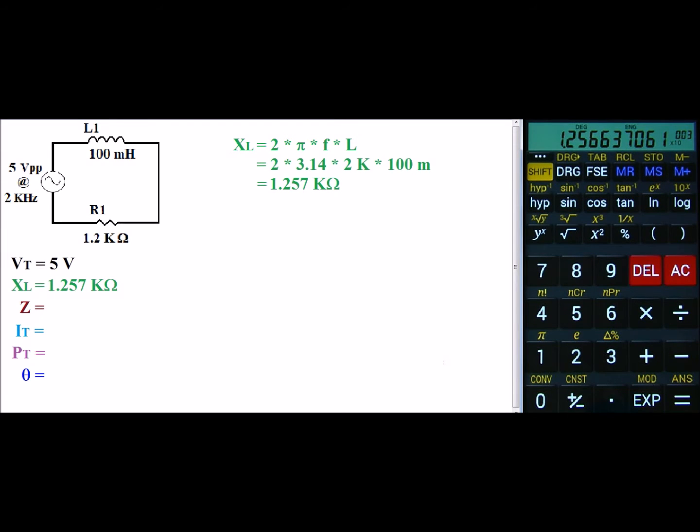Now if this was a standard resistor circuit, series resistor, we would just add the two resistances together. But this isn't. We have a reactive component. So instead of resistance, we call it impedance, Z.